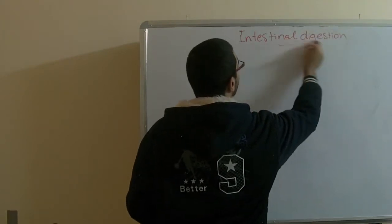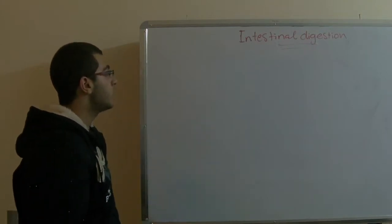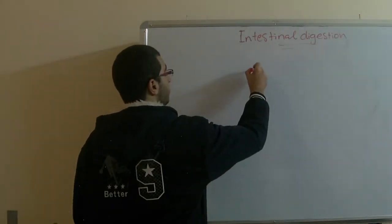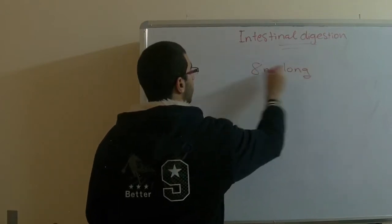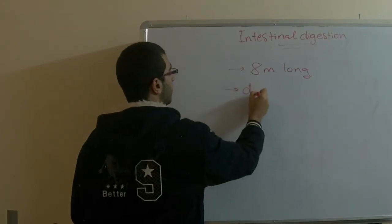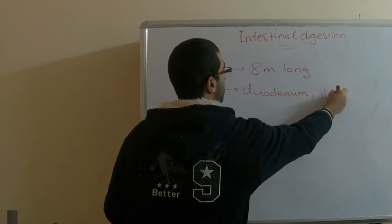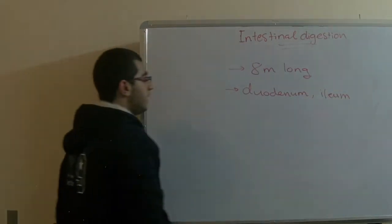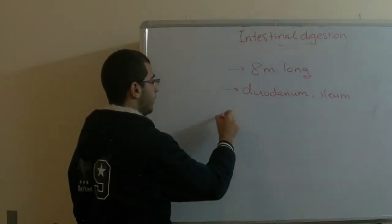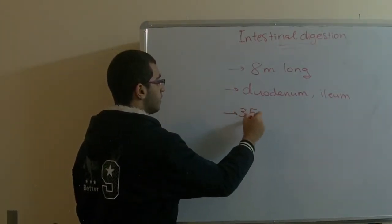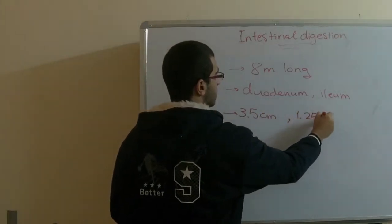Before talking about intestinal digestion, there are some facts about the intestines that we will mention. The first thing is that the intestines are 8 meters long. They consist of two regions, the duodenum and the ileum. The radius of the small intestines at their beginning is 3.5 centimeters and at their ends is 1.25 centimeters.